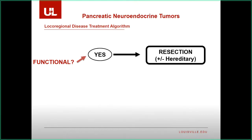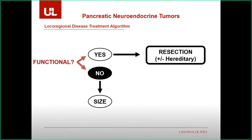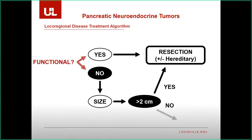For local-regional treatment, we first decide whether the tumor is functional or not, based on history. If it's functional, we pretty much always recommend resection. For MEN1 patients it can get tricky. In general, functional neuroendocrine tumors of the pancreas should be removed. If it's nonfunctional, size is critically important — the cutoff is two centimeters. Greater than two centimeters, we recommend resection. Less than two centimeters, we recommend observation.